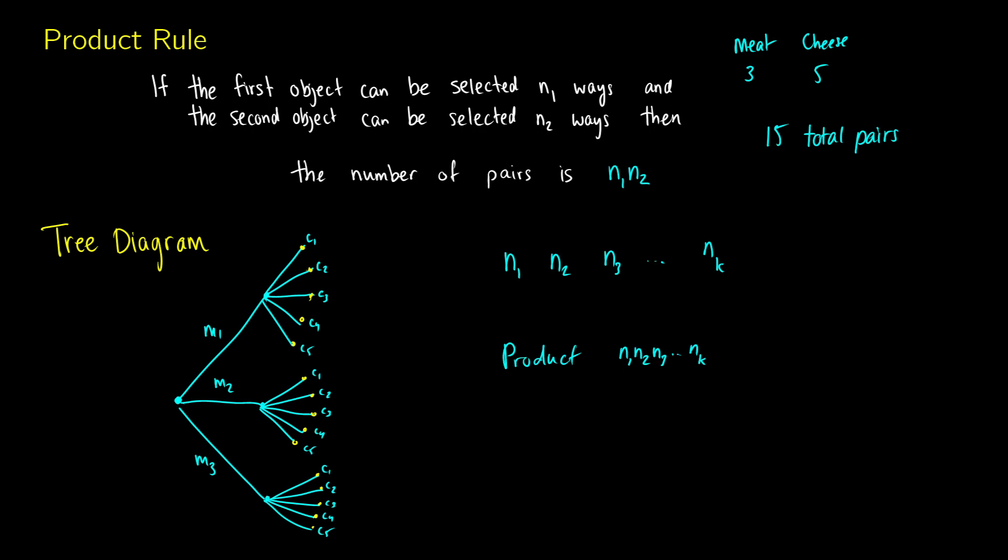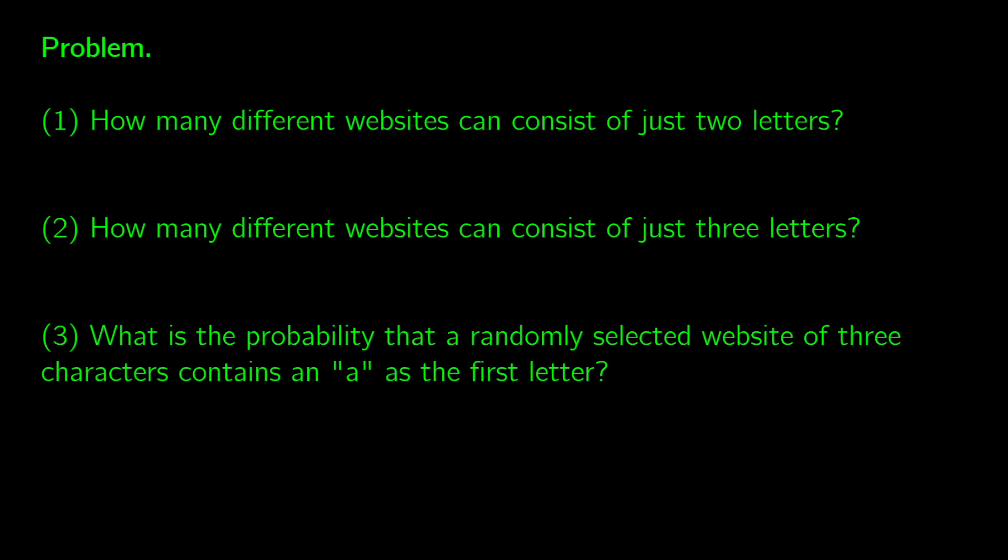So it's best to just show these through examples. So two problems. Imagine that you're trying to make a website name, so a domain name, and you can only use two different letters. How many different websites can you make with just two letters? Well, we have to think about how many letters there are. So we need two letters. There's going to be 26 ways to choose the first letter, 26 ways to choose the second letter. What we're going to get is 26 squared different websites that we can make.